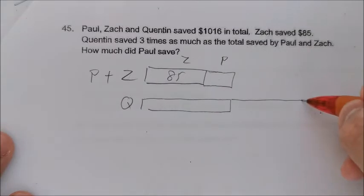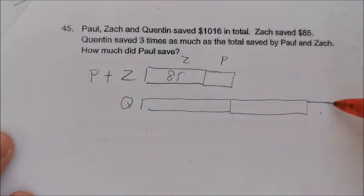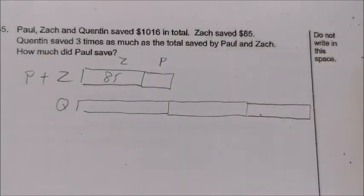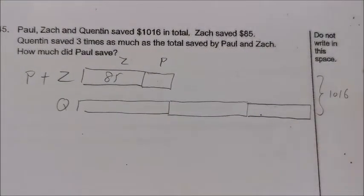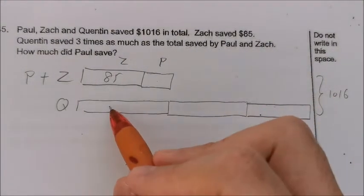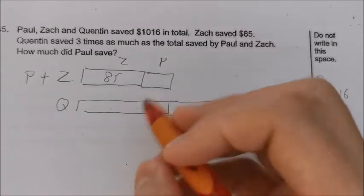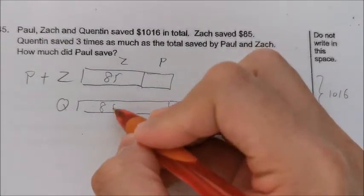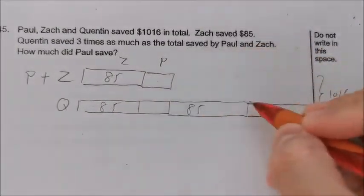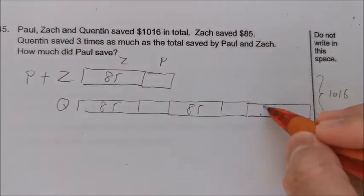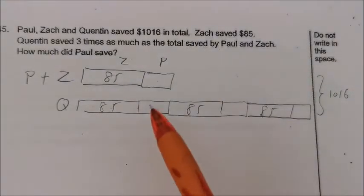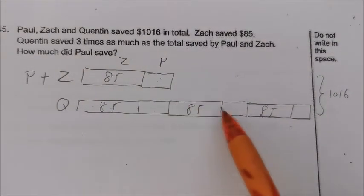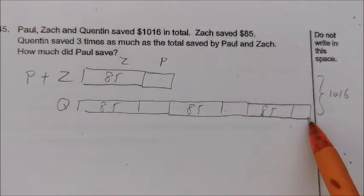So that's one, two, and three units for Quintin. And all together, the total is $1,016. So this one whole unit — can we change it to 85 and one unit? So 85 plus one unit, 85 plus one unit. How many units do we have? One, two, three, four.